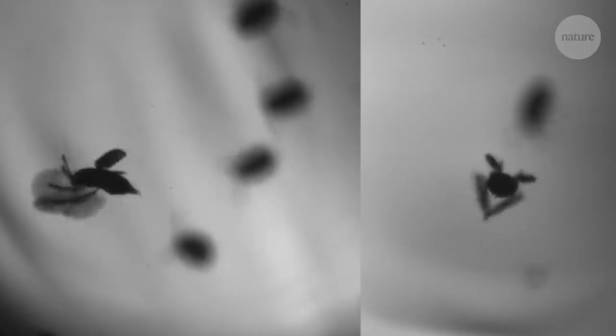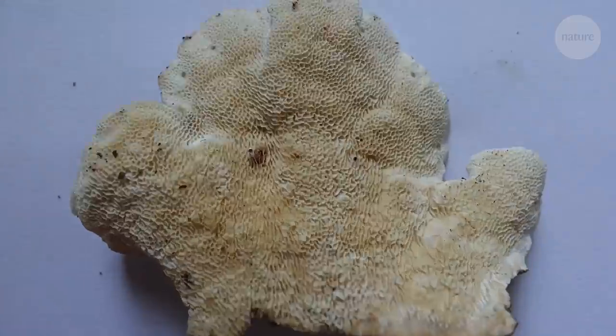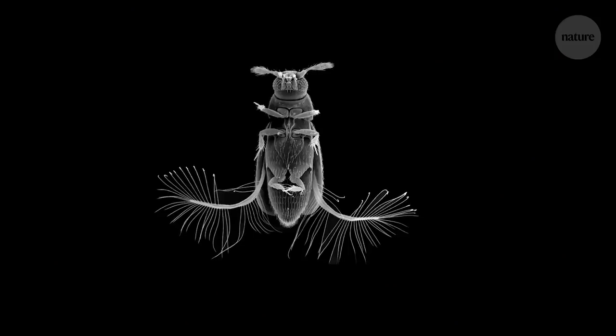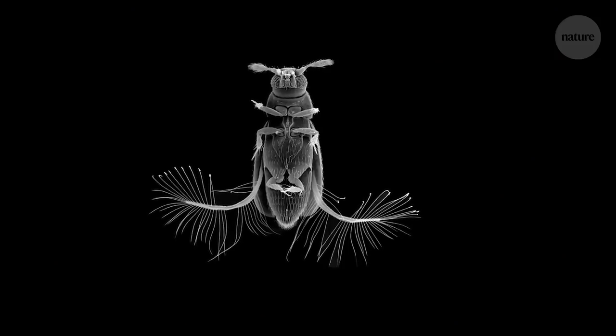Flying is a tricky business, but when you're less than half a millimeter long, like this feathery winged beetle, things get even trickier. At this scale, the laws of physics work differently. Air feels more like syrup. And until recently, scientists thought this beetle didn't fly at all.